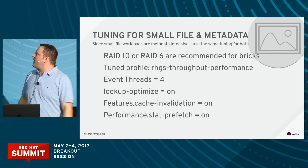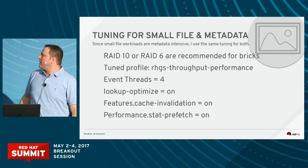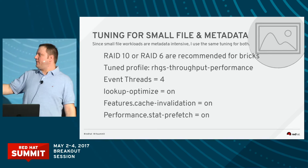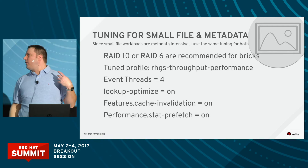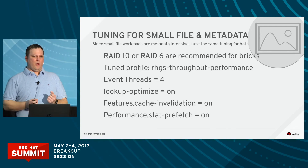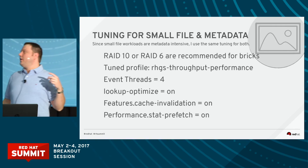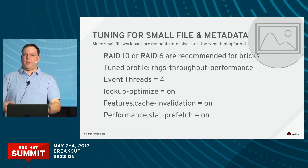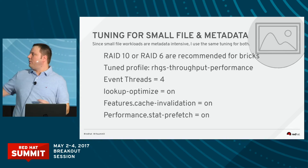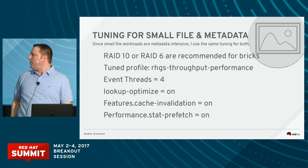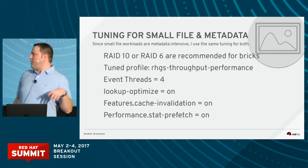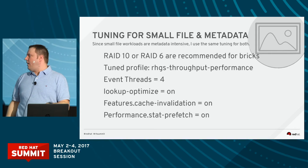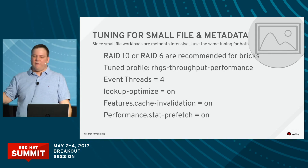RAID 10 and RAID 6 are recommended for bricks. The tuned profile we set is RHS throughput performance. Event threads — this is a theme that's been common through Gluster. Gluster started out with a lot of single-threaded operations, and what we've been doing is taking those single-threaded operations and making them multi-threaded, doing more things in parallel. Lookup Optimize we touched on earlier. Cache invalidation has to do with MD cache — it's just how often to invalidate cache. Stat prefetch we also covered.